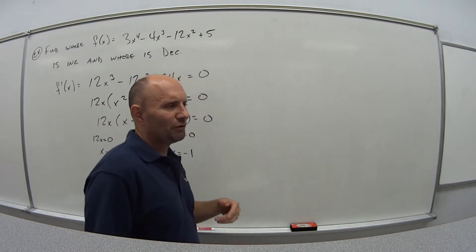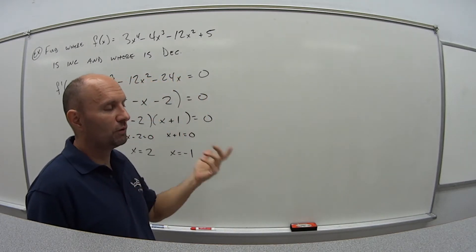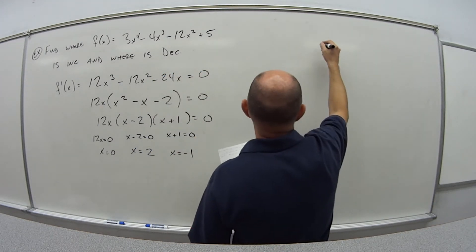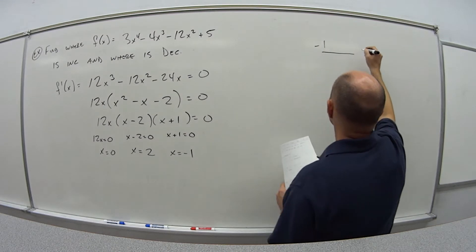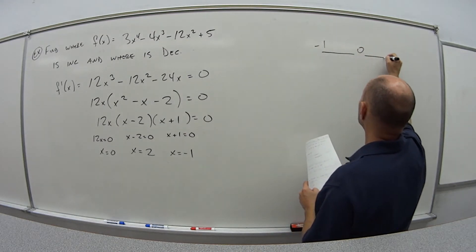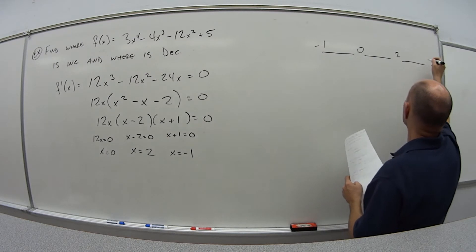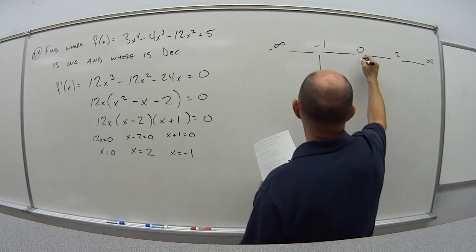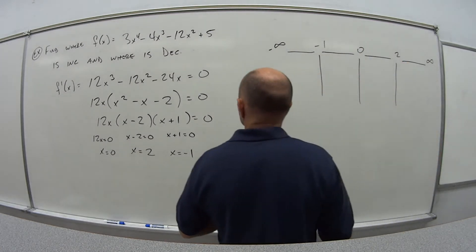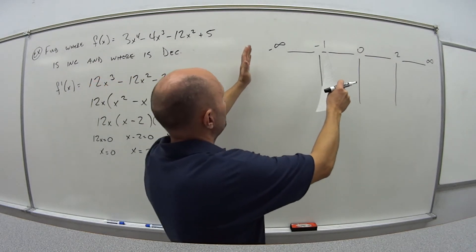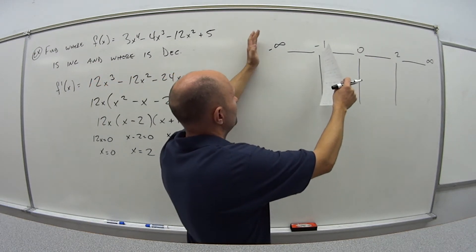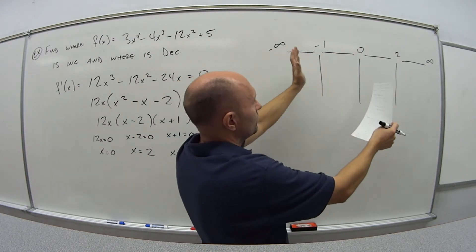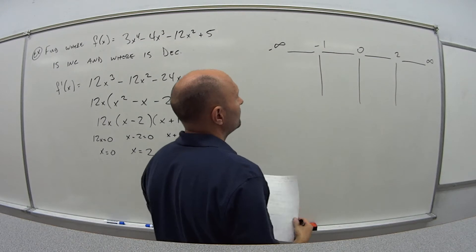I'm going to build a table similar to when we were solving inequalities. I'll use these critical points: negative 1, zero, and positive 2, going from negative infinity all the way to infinity. Then I want to know within each interval — from negative infinity to negative 1, from negative 1 to 0, from 0 to 2, and from 2 to infinity — whether the function is increasing or decreasing. I need to know what's happening with each factor: 12x, x minus 2, and x plus 1.